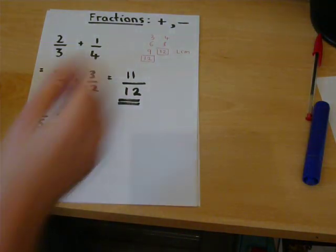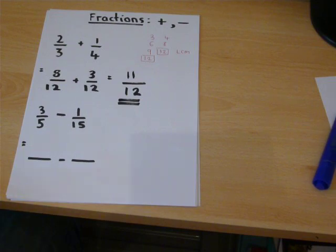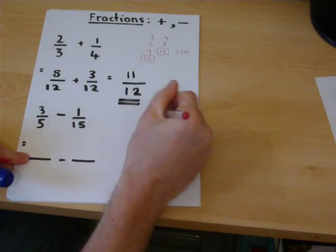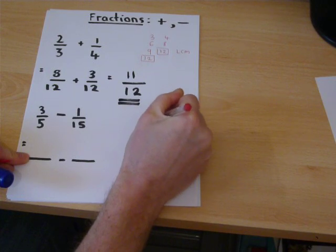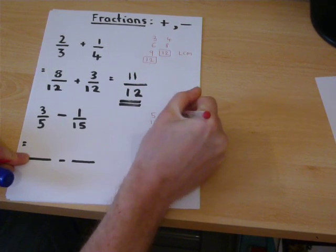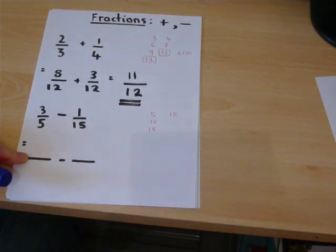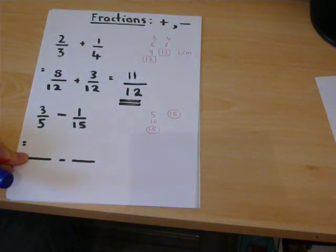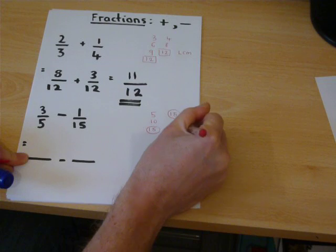Subtracting fractions obeys the same principles. We can write down the 5 times table and the 15 times table. But they overlap straight away at 15. That is the lowest common multiple.